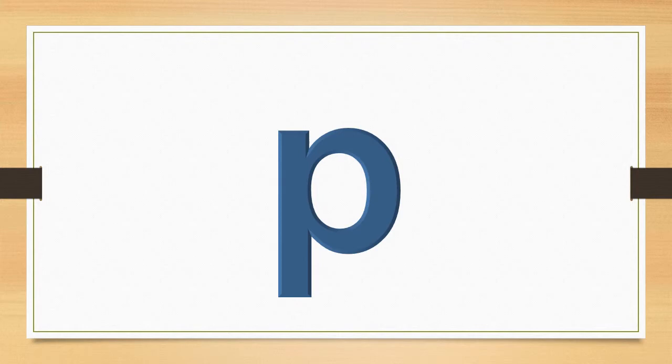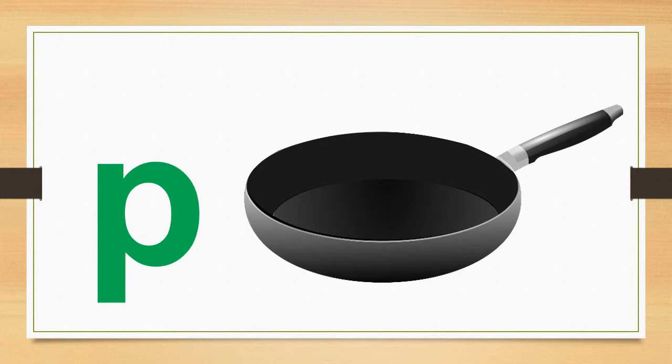What sound does the letter P make? The letter P says P. P says P. The word pan starts with the sound P. P, pan, P. Say it with me. P, pan, P.